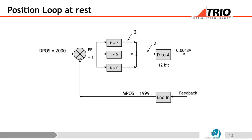If you increase the P gain — say to 20 — you get a bigger voltage and it pulls into position faster, but there's a problem: it starts to overshoot and oscillations occur. So there's only so much you can do with P gain alone.